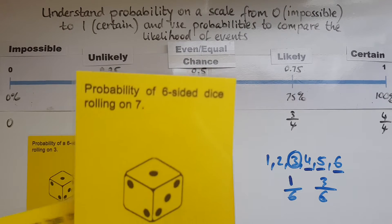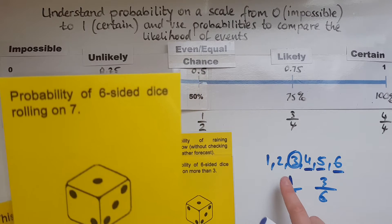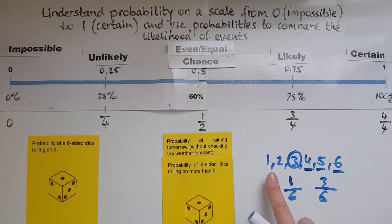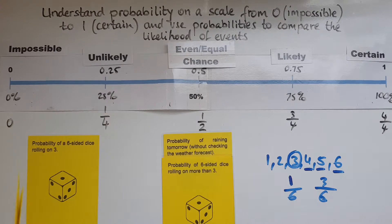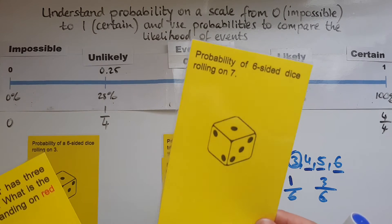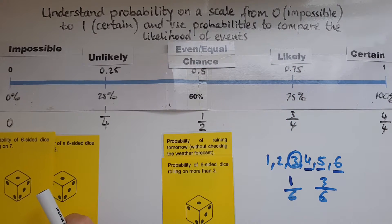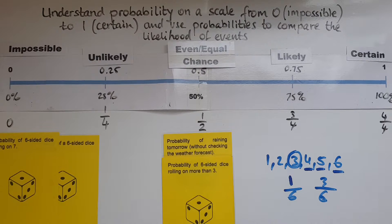Now the probability of a six-sided dice rolling on seven. A six-sided dice has the numbers one to six as possible outcomes. Is seven a possibility? No, it's not. For that reason, rolling a seven is impossible, so the probability is zero. I'll place it at the impossible position on the scale.